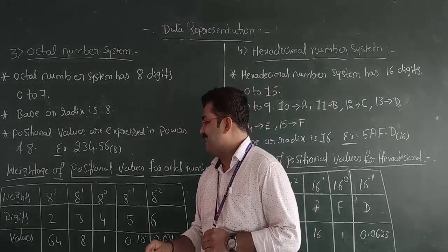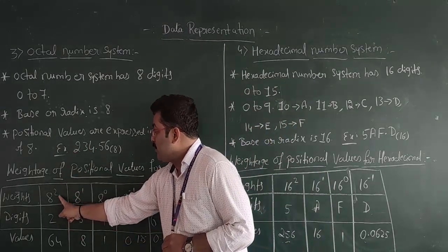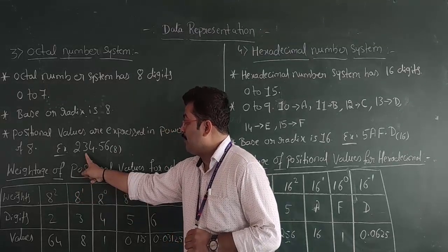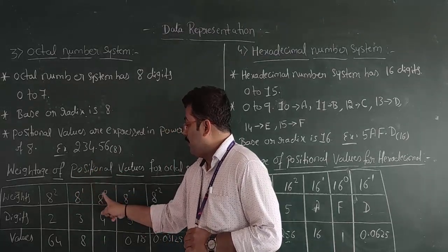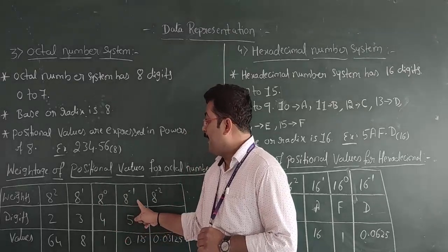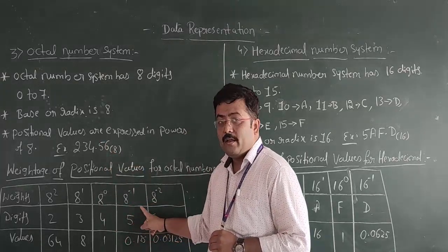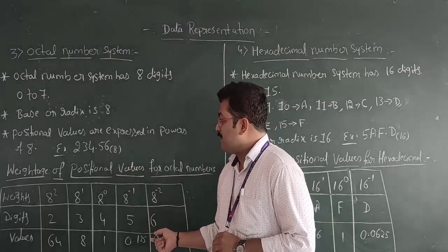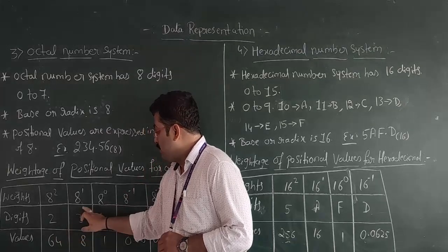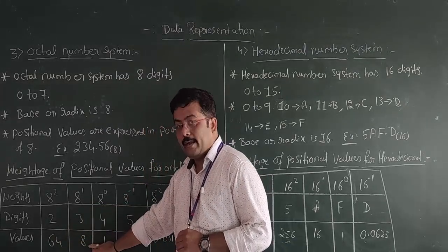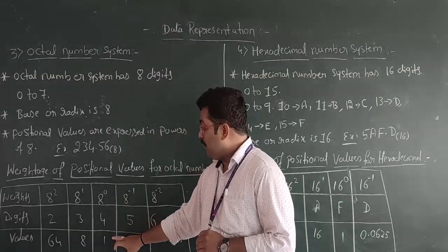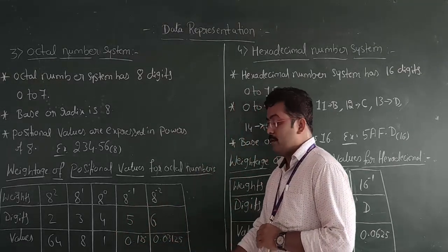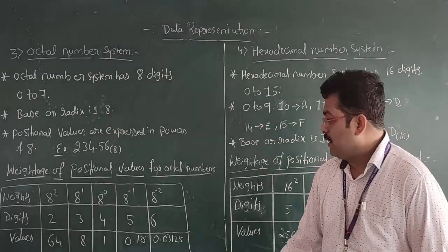For the example 234.56 base 8: the digit 2 is at position 8 squared, 3 is at 8 to the power of 1, 4 is at 8 to the power of 0, 5 is at 8 to the power of minus 1, and 6 is at 8 to the power of minus 2. The positional values calculate as: 8 squared equals 64, 8 to the 1 equals 8, 8 to the 0 equals 1, 8 to the minus 1 equals 0.125, and 8 to the minus 2 equals 0.03125.